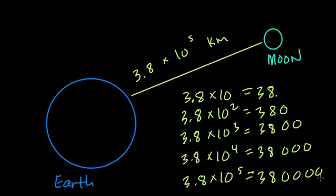I noticed that there are here 4 zeros for an exponent of 5, 3 zeros for an exponent of 4, 2 for an exponent of 3, 1 for an exponent of 2, and no zeros for an exponent of 1.